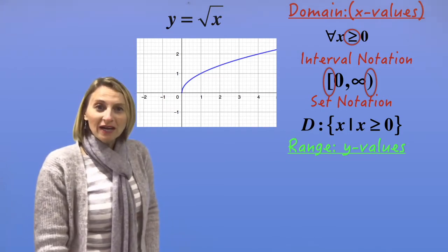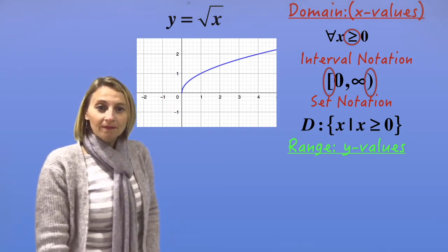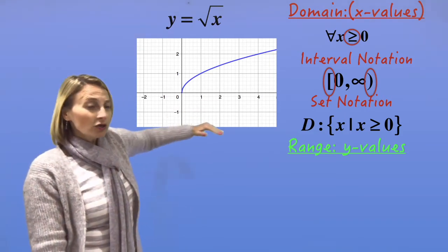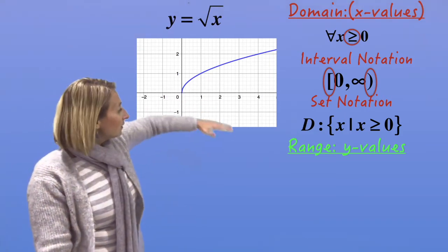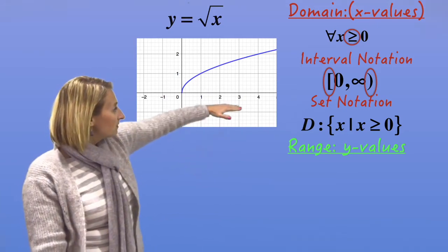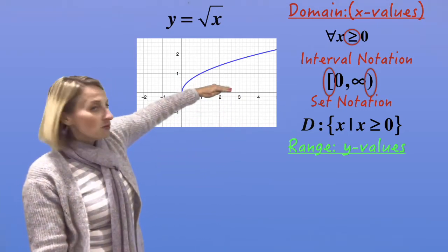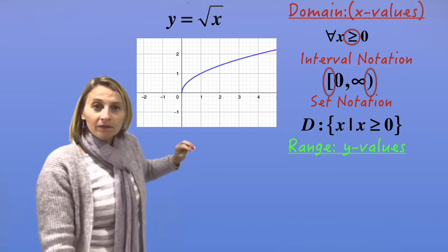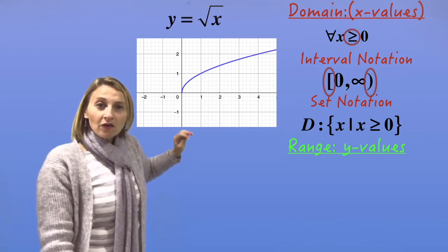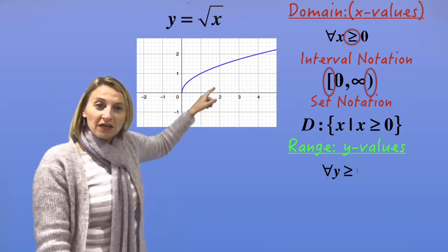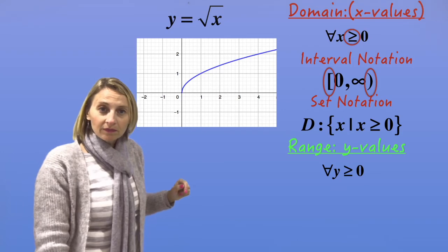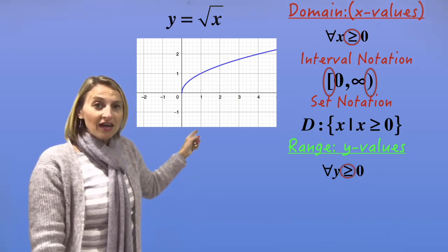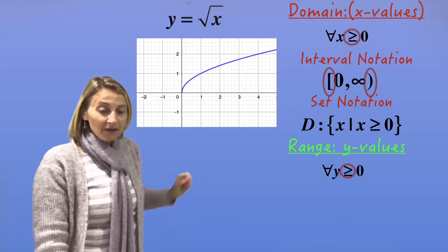Let's do range. What's the range? Have a look at your picture. Can y be negative 1? No. Can y be 0? Yes. Y can be 1? Yes. 2? Yes. 3? It'll keep going. So this one has all y values bigger than or equal to 0. Don't forget that it can be greater than or equal to — be careful of that.